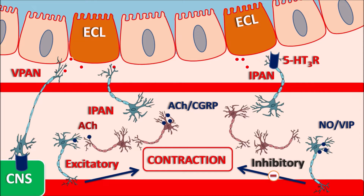Excitation can also be promoted by 5-HT4 receptors, which are present at the intrinsic primary afferent neurons. When 5-HT acts on these receptors it releases more acetylcholine, which increases contraction of GI smooth muscle. That is why 5-HT4 receptors are prokinetic in nature.